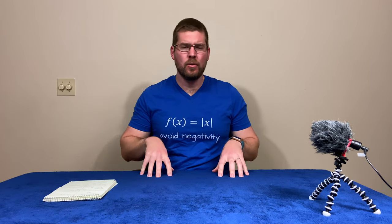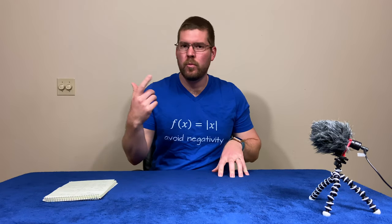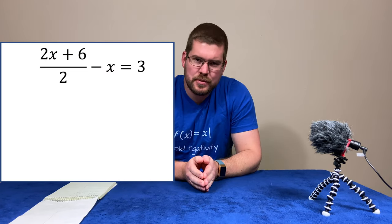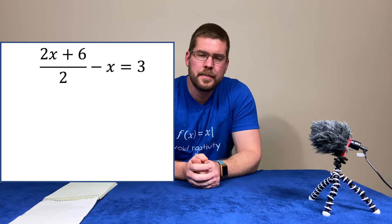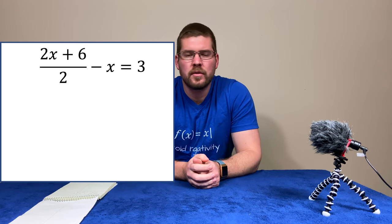And now, you might be thinking, okay, well, let's keep trying different numbers. Well, let's keep working. And this is actually a simple algebra problem. So, again, let's take 2x plus 6 divided by 2 minus x equals 3. And let's adapt this equation.